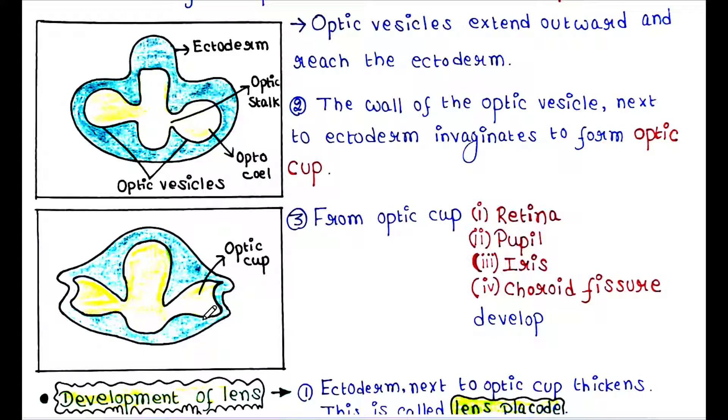From this optic cup, the retina, pupil, iris, and choroid fissure develop.